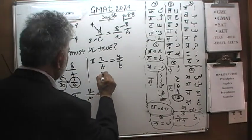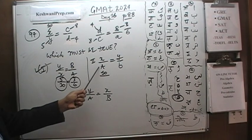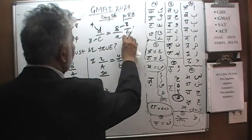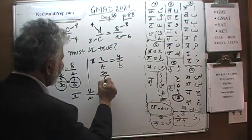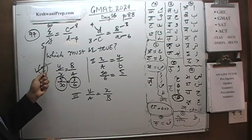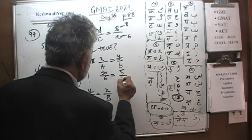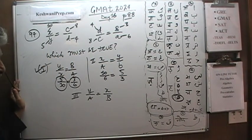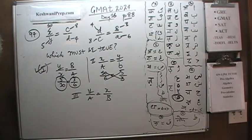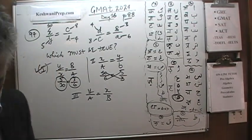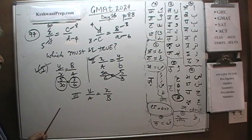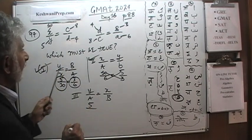Testing statement 2: x over a equals 10 over 6, and y over b equals 5 over 3. Cross-multiplying: 10 times 3 is 30, and 6 times 5 is 30 — they are equal. Statement 2 also works.